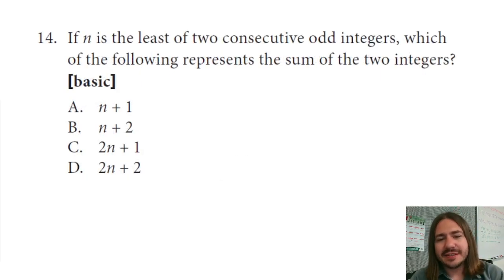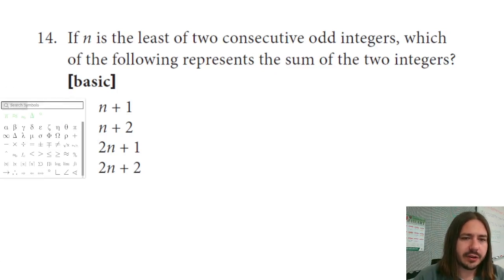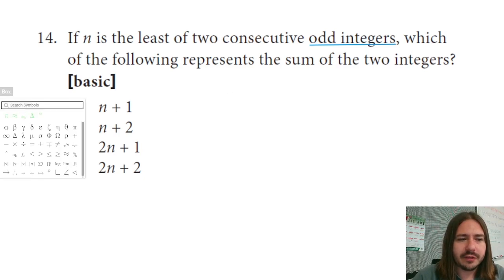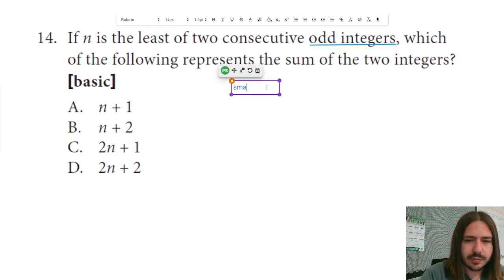Number 14 says if N is the least of two consecutive odd integers, which of the following represents the sum of the two integers? So odd integers are going to be numbers that are whole numbers that are not divisible by 2. So we're talking numbers like 1, 3, 5, 7, 9. Really, it's every other number, starting with 1. So if the smaller number is N, so the smaller number is N, then the next consecutive integer...